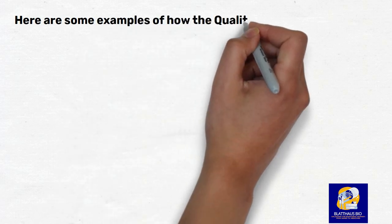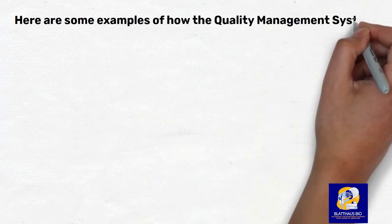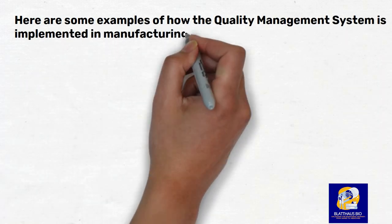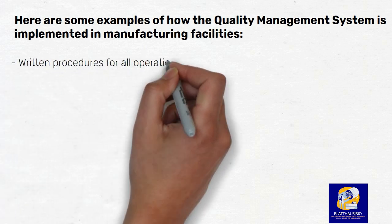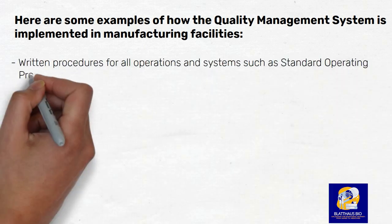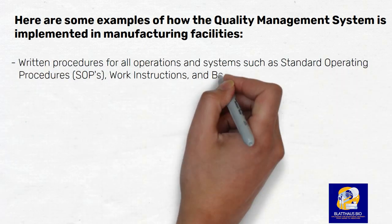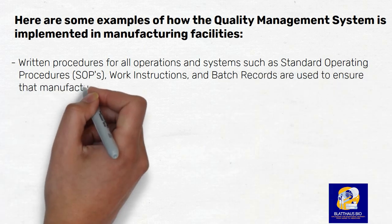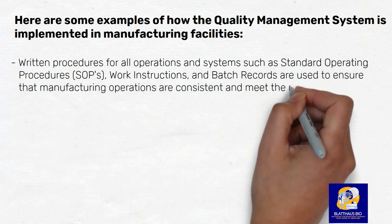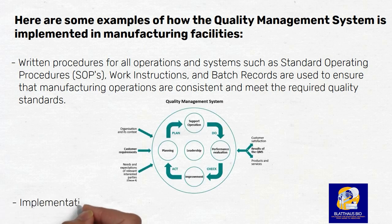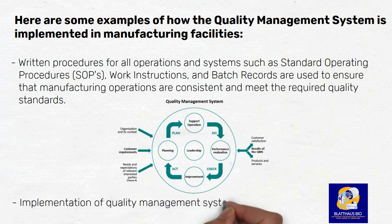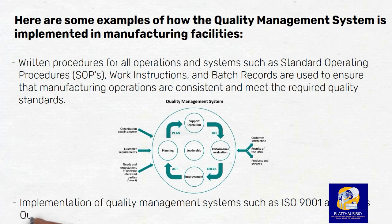Here are some examples of how the Quality Management System is implemented in manufacturing facilities. Written procedures for all operations and systems — such as standard operating procedures (SOPs), work instructions, and batch records — are used to ensure that manufacturing operations are consistent and meet the required quality standards. Quality management systems such as ISO 9001 and FDA's Quality System Regulation (QSR) are implemented.